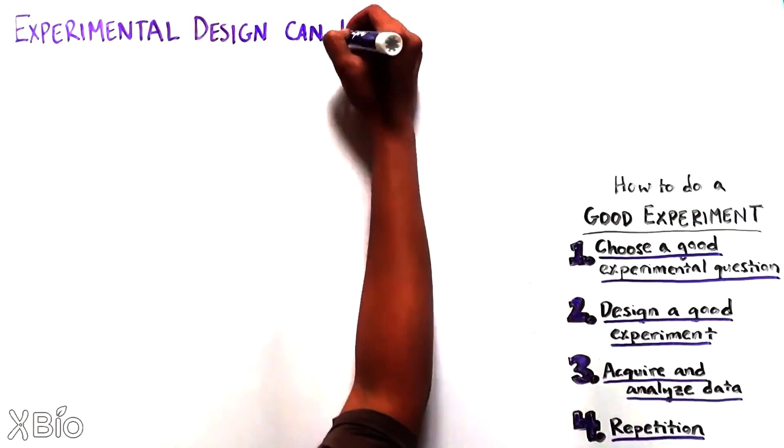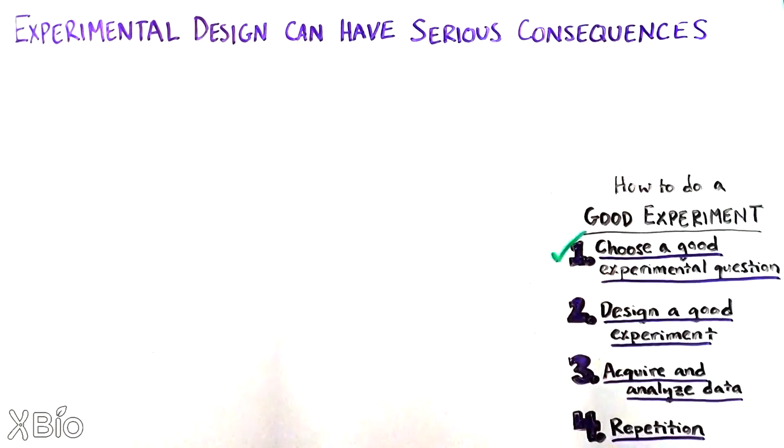So remember, when designing an experiment, you need a good question, elegant experimental design with a control group, to carefully choose how many and which people you will include and what data to collect, sensible analyses and replication.